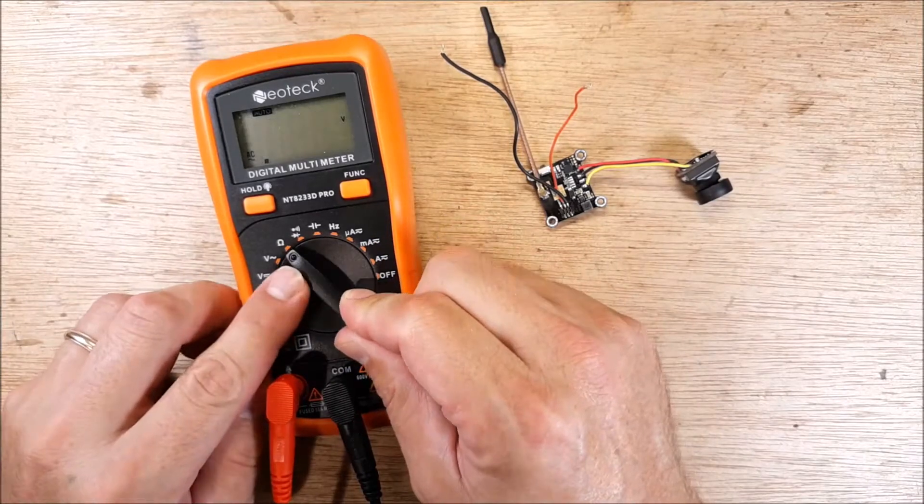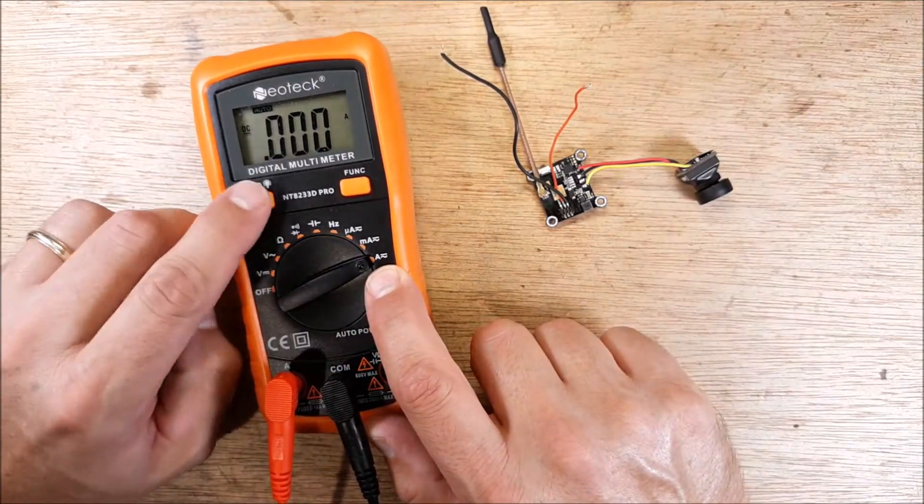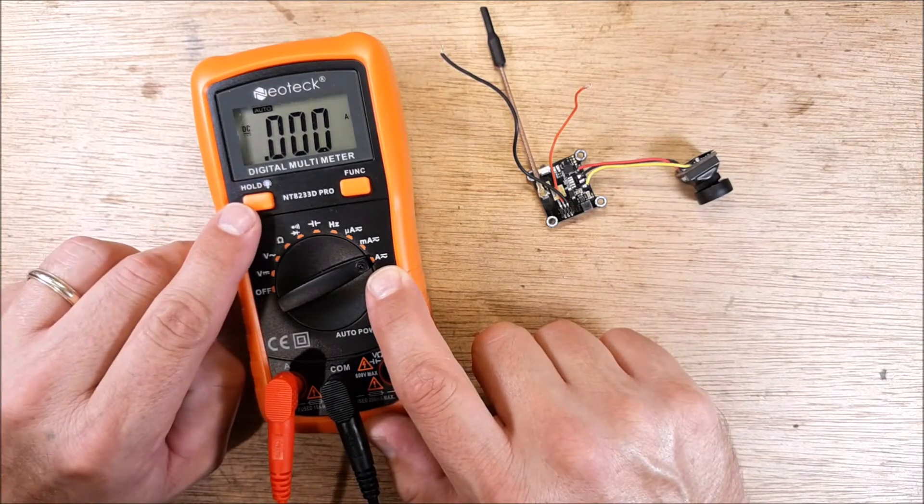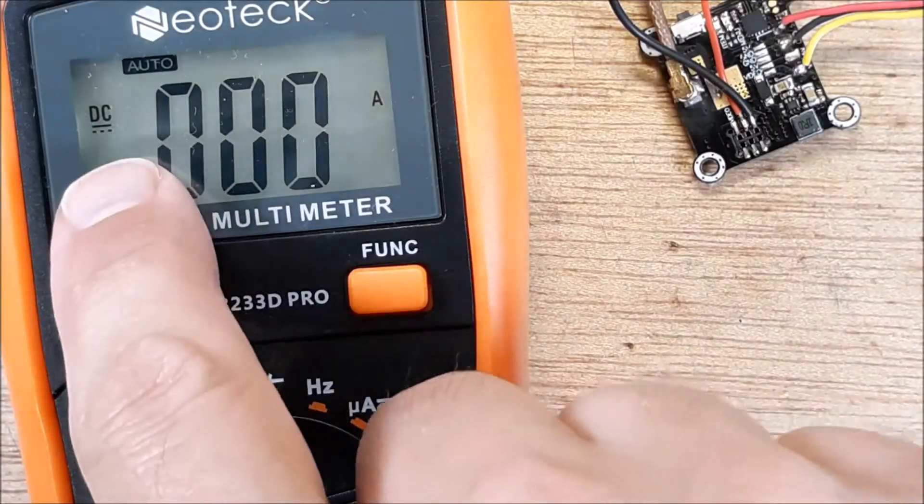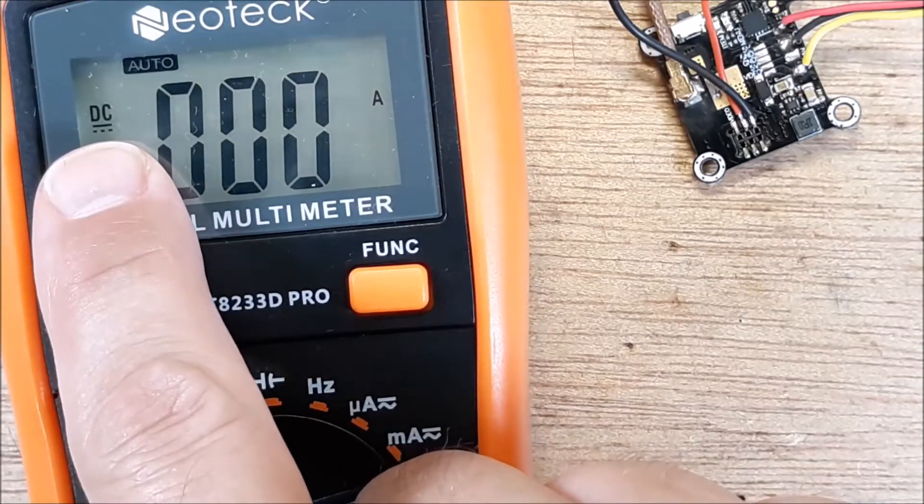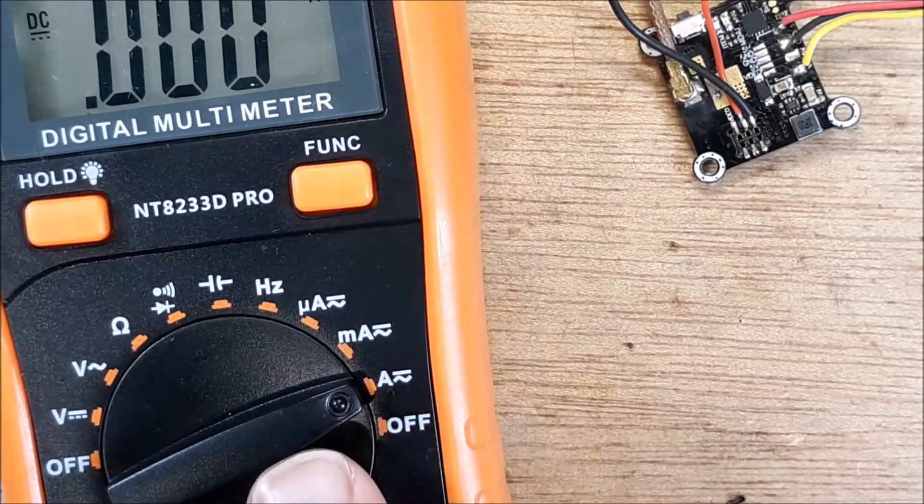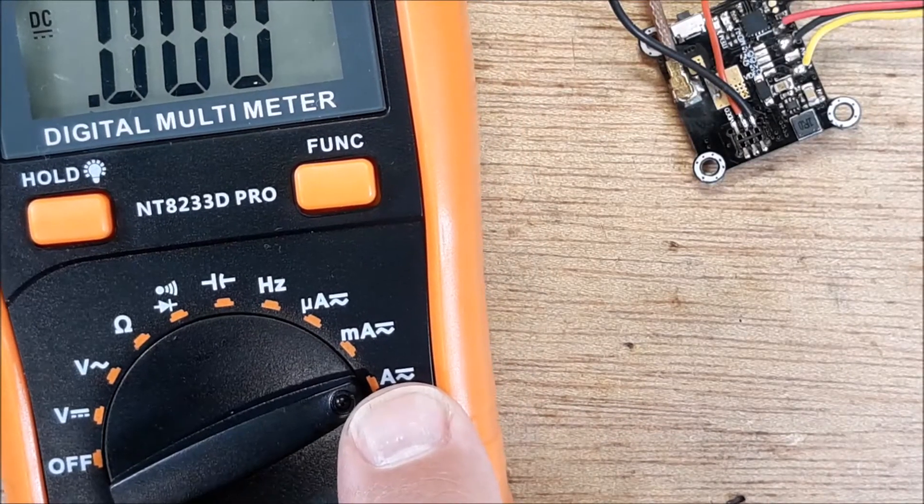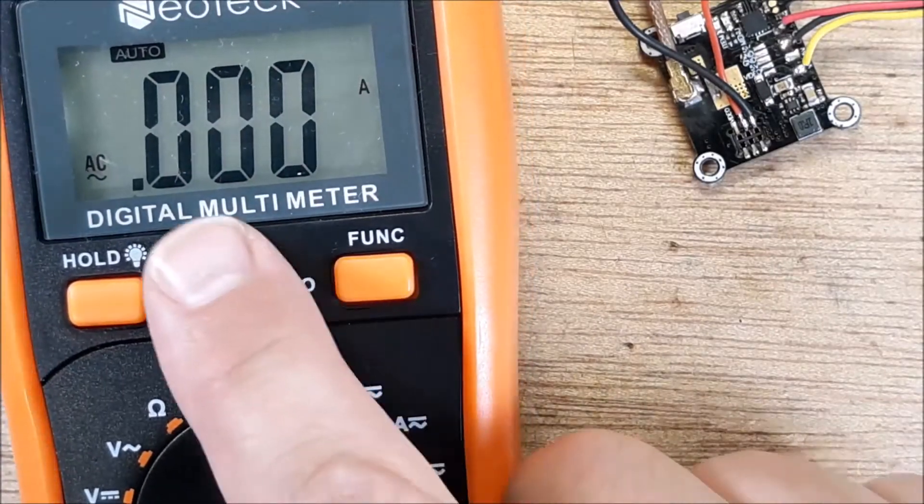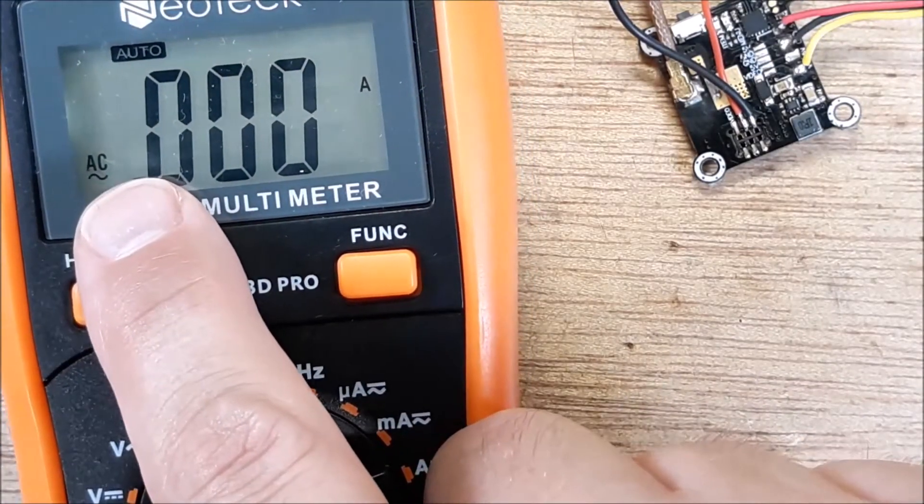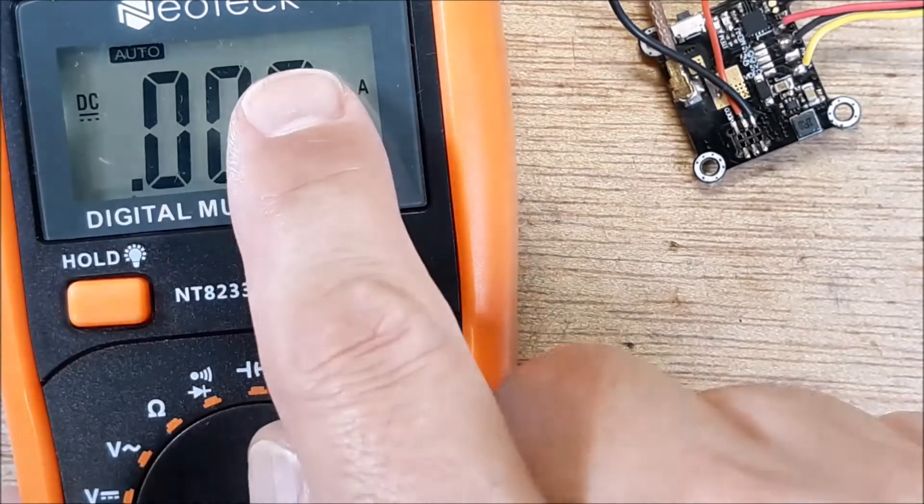We're just going to go up here and we're going to go to amps, and this is DC. You see here it says DC. We're working with DC voltage, we're not working with AC voltage. On this meter it automatically can choose. If you hit function, now we're checking the amp draw of alternating current - we don't want that. So we're DC and we're doing amp draw.